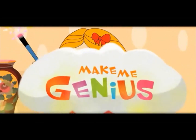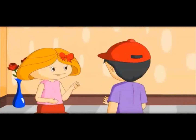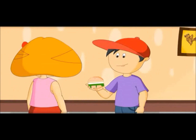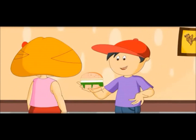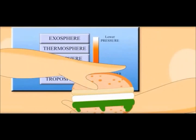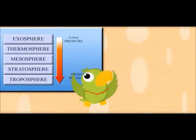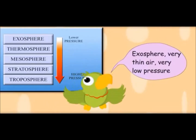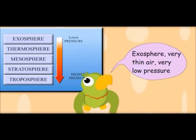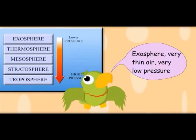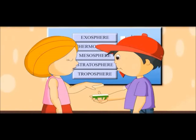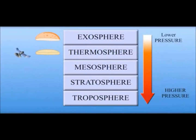Now we would see different layers of the atmosphere. Let us understand air in the atmosphere of the earth. There are five layers of atmosphere, like five layers of this burger. This is the top layer — air is very thin here. It is called the exosphere: very thin air, very low pressure. The next layer is called the thermosphere, and satellites fly in this layer.